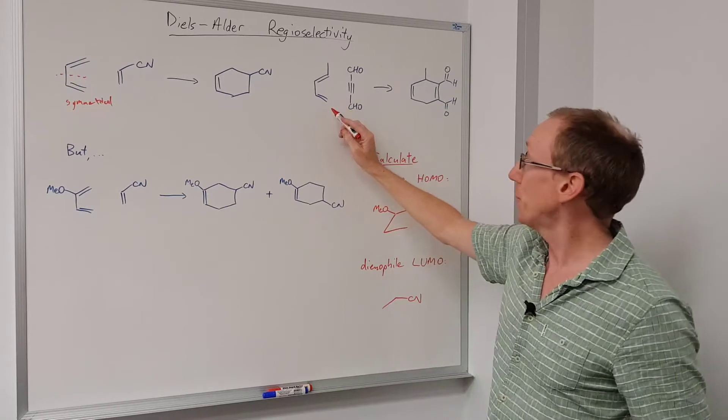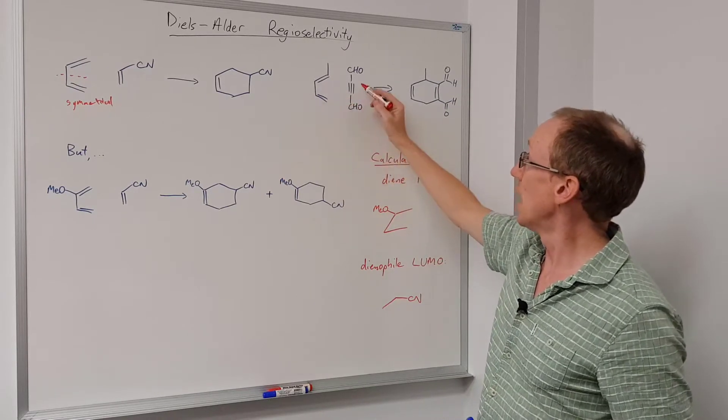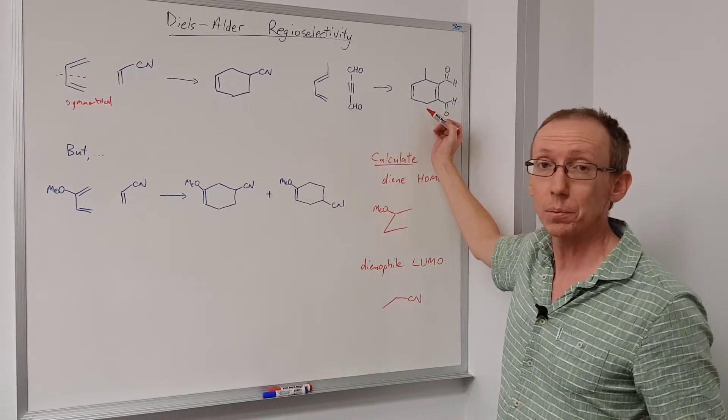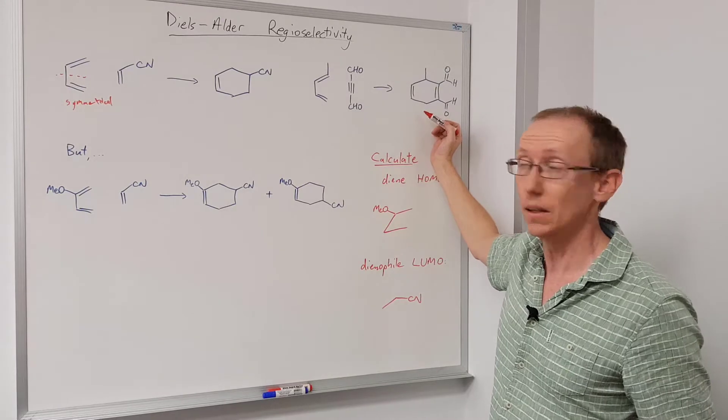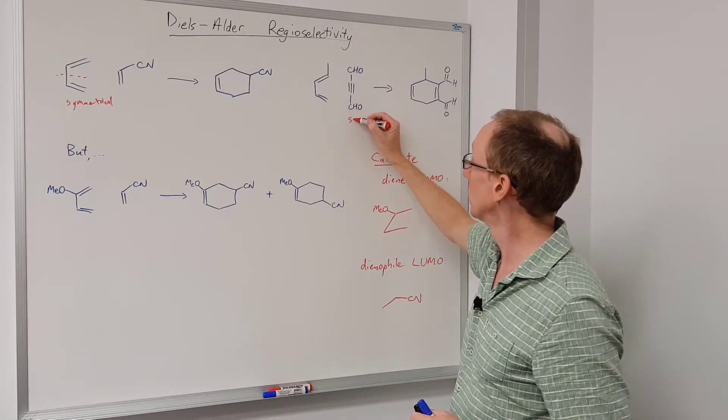Similarly, if you take this diene and this dienophile, there's only one possible product once again, and that's because the dienophile is symmetrical.